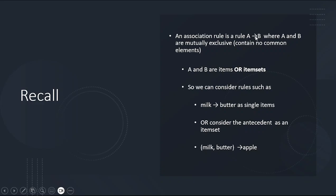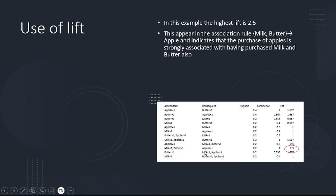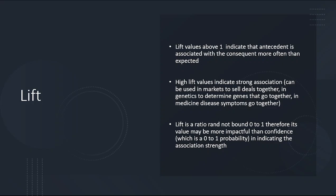Recall that the association rule A to B requires A and B to be mutually exclusive — A and B are items or item sets. We can consider rules like milk to butter, or milk and butter to apples, where milk and butter is the item set. For lift, the strongest value here is 2.5, indicating the strongest association. Lift values above 1 indicate the antecedent is associated with the consequent more often than expected, and a high lift value indicates a strong association — useful for selling items together.